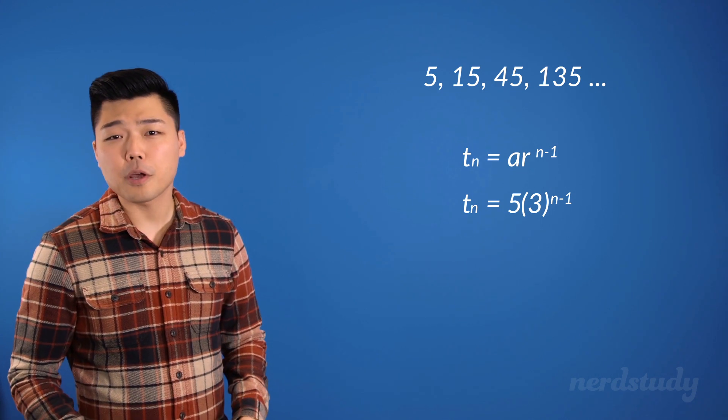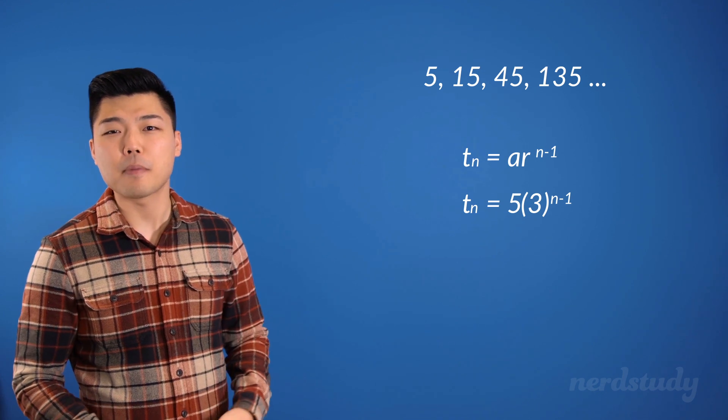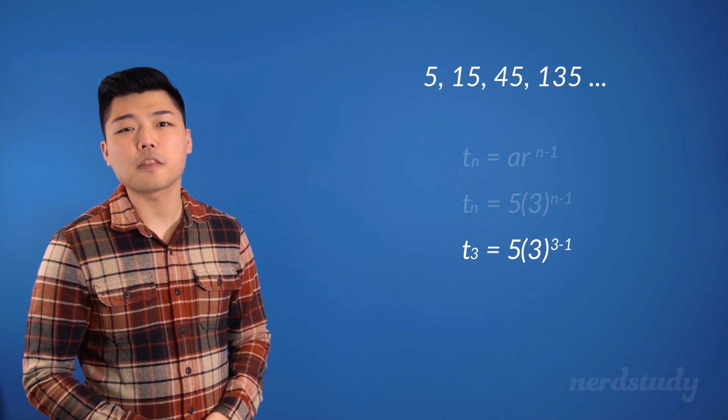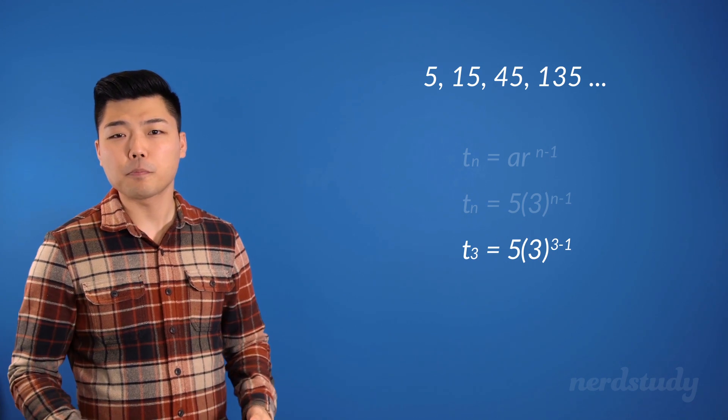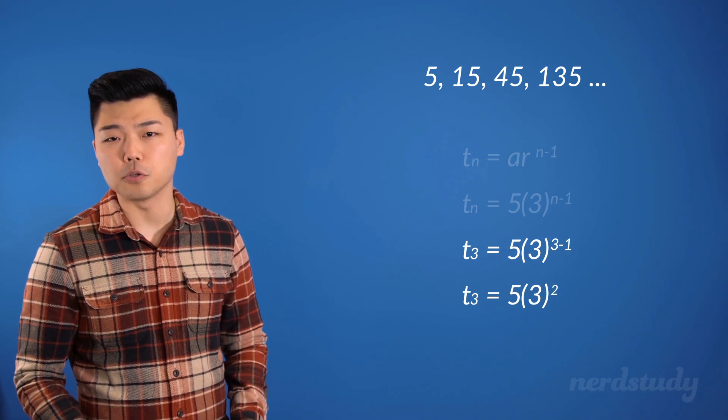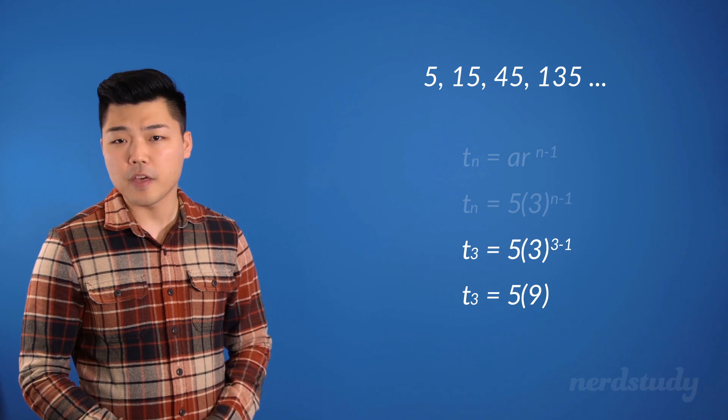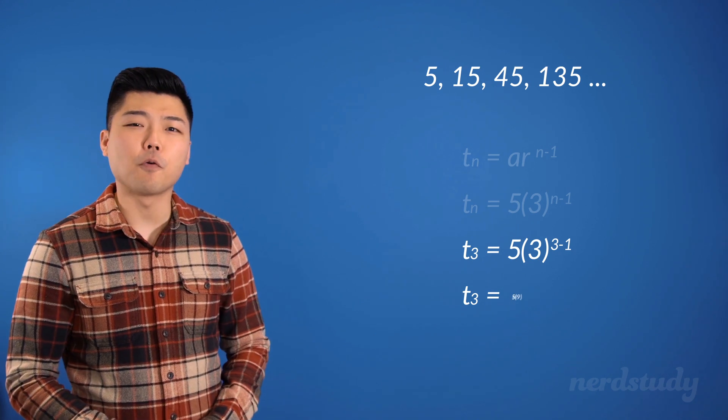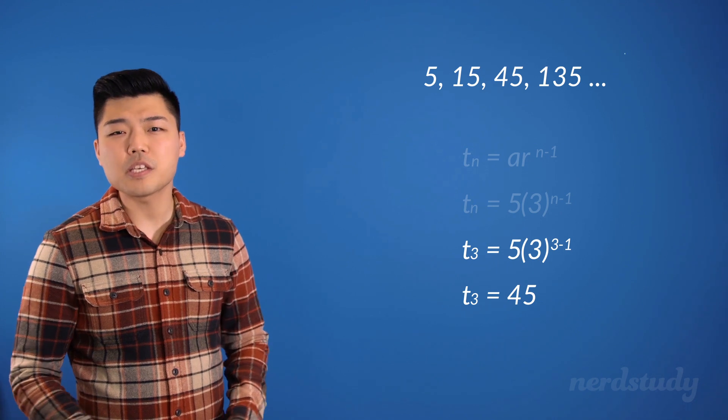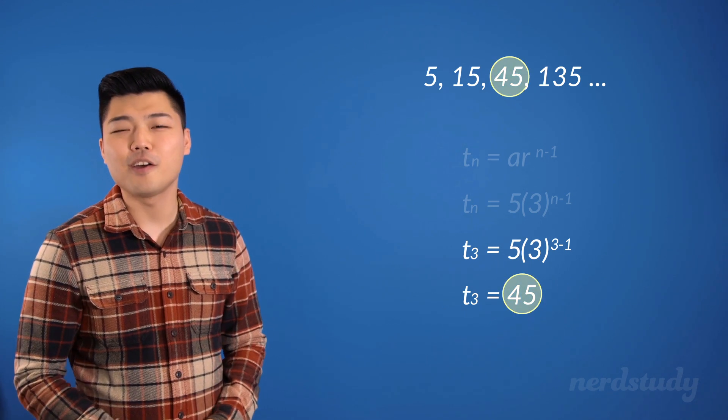Alright, now let's try plugging in a few values in for n and see if it's a result that matches our sequence. If we plug in 3 for n, we get the following. Now if we simplify this, we get 5 times 3 to the exponent 2, which we compute first to get 9. Then do 5 times 9 to get 45. And if we look at our sequence, we see that our third term is indeed 45. Awesome.